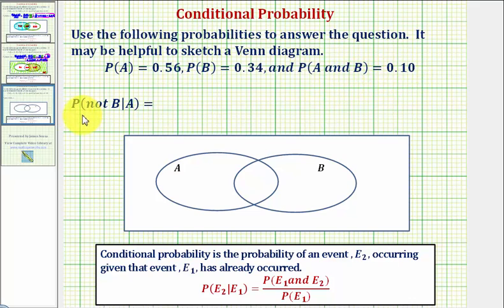We want to find the probability of not B, given A has already occurred. This is conditional probability, which is defined below. Also, applying our definition,